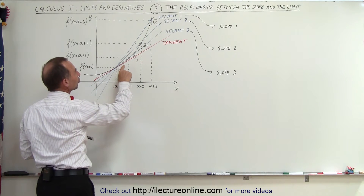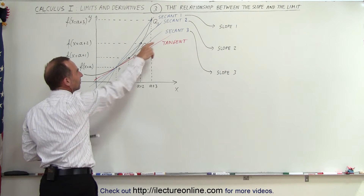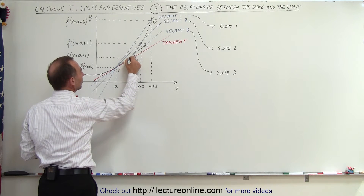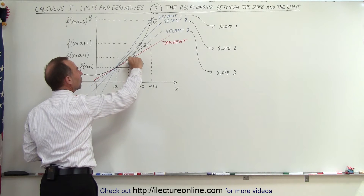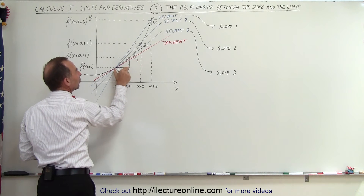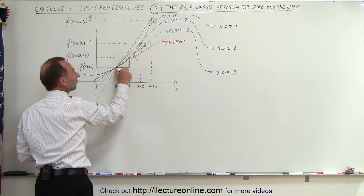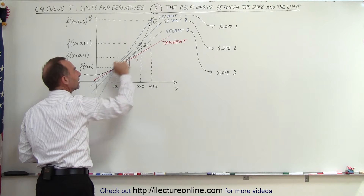For example, if I want to know the slope of secant line 3, I draw a triangle. This would be the rise, this would be the run, and the ratio of this rise over this run gives us the slope of that secant line.